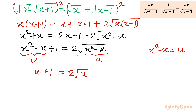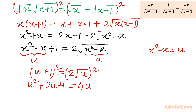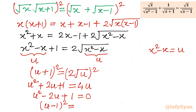Squaring both sides again: (u + 1)² equals 4u, which gives u² + 2u + 1 = 4u. Taking all terms to one side: u² minus 2u plus 1 = 0, which is (u minus 1)² = 0. So u equals 1 with multiplicity 2.